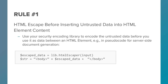Rule 1: use your secure encoding library to HTML escape before inserting untrusted data into HTML element content. You want to use your security encoding library to encode the untrusted data before you use it as data between an HTML element. Here is example pseudocode for server-side document generation — the untrusted input data is fed into your secure encoding library's HTML escaper, and the output is what you use as the input for the contents of the HTML element.